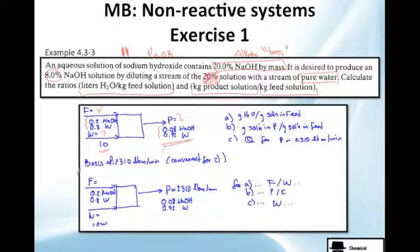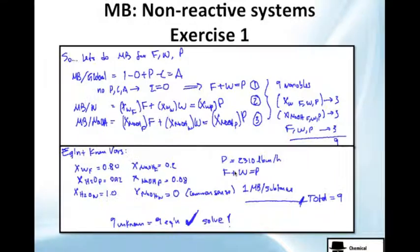What I recommend is, first, do a basis of calculus, which is simply this one here. This is convenient because in letter C you will see that they ask you what will be the Q for P if P value is this one. So let's do it for this. I just write down here and let's go for A, B, and C.